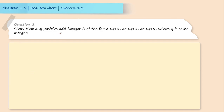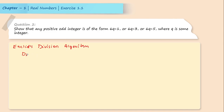We will solve this using Euclid's division algorithm. Euclid's division algorithm states that dividend is equal to divisor into quotient plus remainder.